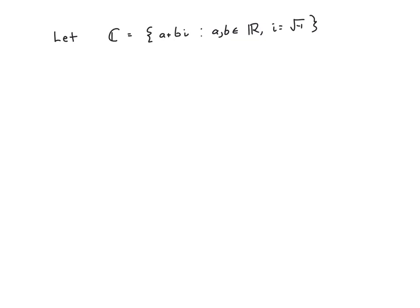So we recall that the set of complex numbers is the set of all numbers of the form a plus b times i where a and b are real numbers and i is the square root of negative one.